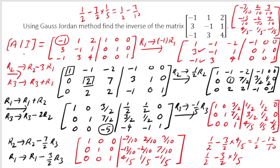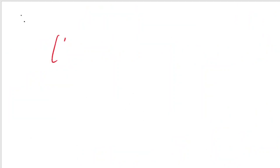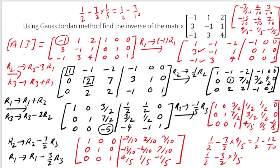The idea is simple: first get a 1 in the (1,1) position — if there's a 2, multiply R1 by 1/2. Then zero out everything below it. Next make a 1 in the (2,2) position and zero everything above and below it. Then make a 1 in the (3,3) position and zero everything above it. Practice is the only way to build confidence. This is all for this video on the Gauss-Jordan method. In the next video I will talk about the Cayley-Hamilton theorem. Thank you for watching.